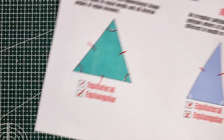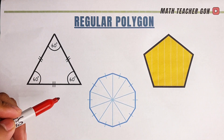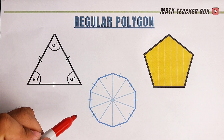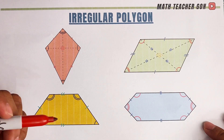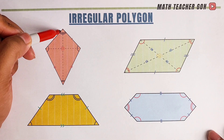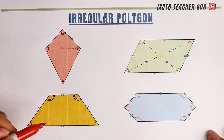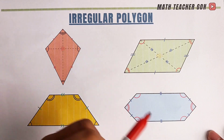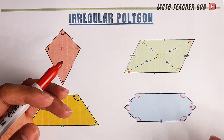I also have here some examples of regular polygons — these three figures are all regular polygons, both equilateral and equiangular. Now this next set of figures are all irregular polygons. This one is a kite — as you can see, this side and this side are not equal, and all the angles are not equal. Same with this trapezoid — the sides are not equal and the angles are not all equal, so it's not equilateral and not equiangular. Same with this parallelogram.